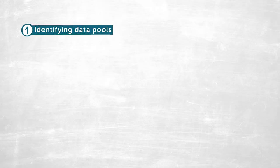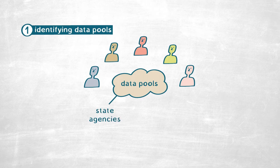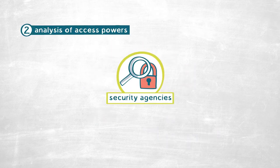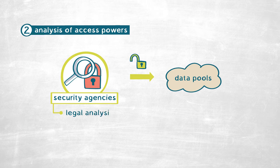We are interested in data pools which contain data of basically everybody in a society. This is not limited to data pools run by state agencies, but also includes data collected by private actors. In the second step, we look at the access powers that security agencies have to these data pools, which requires an intricate legal analysis. A nice byproduct of this procedure is that we get a cartography of the security agencies' powers with regard to certain data pools.